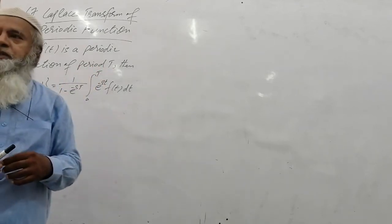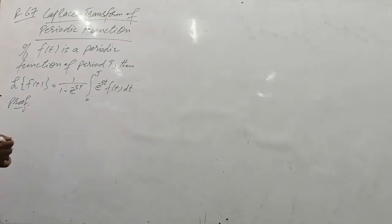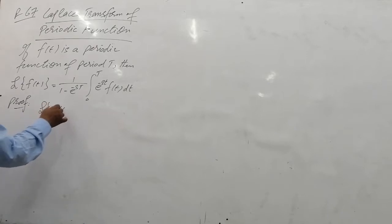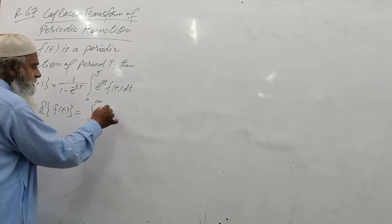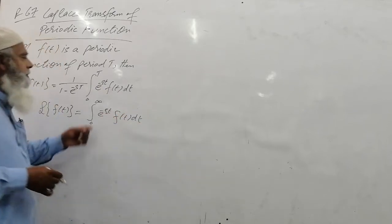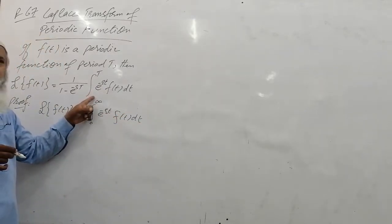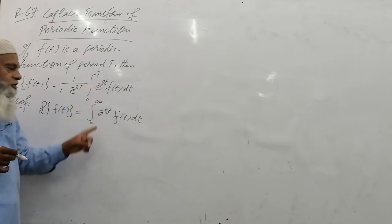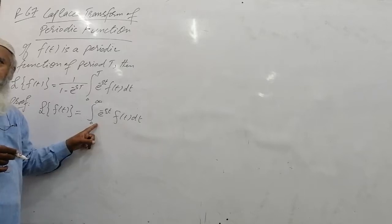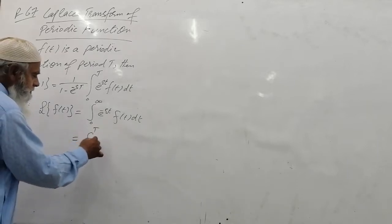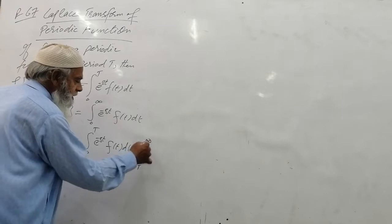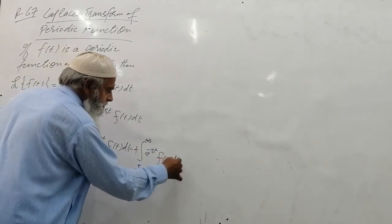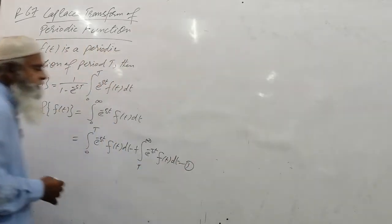This periodic function formula is the Laplace transform formula. When we look at the Laplace transform of f of t, we observe that the integral with limit from 0 to infinity can be broken into two parts: from 0 to capital T, and from capital T to infinity. This gives us the integral from 0 to capital T of e raised to the minus st times f of t dt, plus the integral from capital T to infinity of e raised to the minus st times f of t dt. This will be labeled as equation 1.